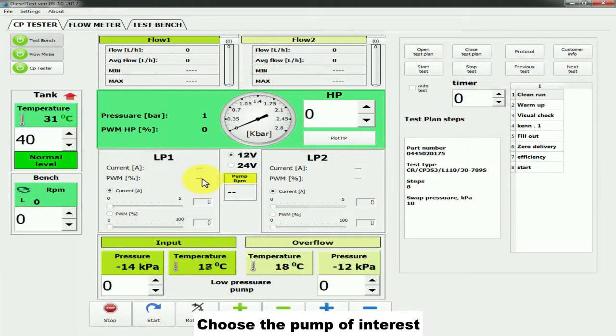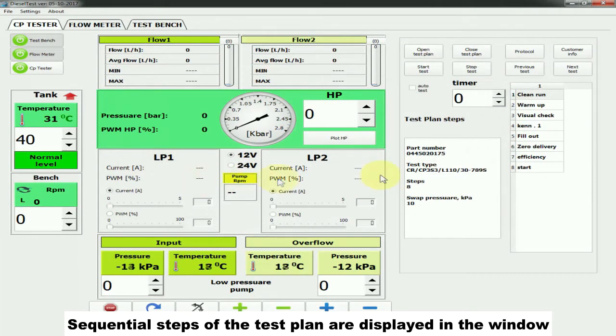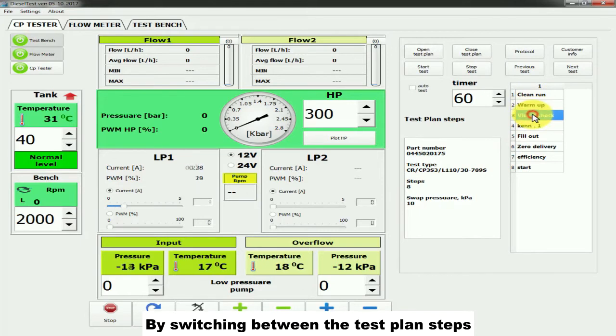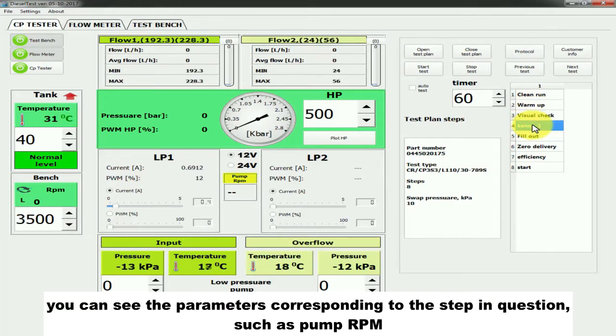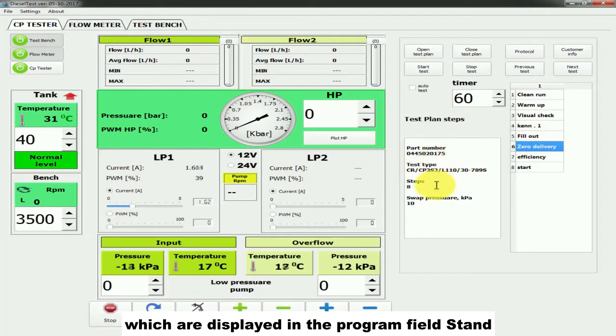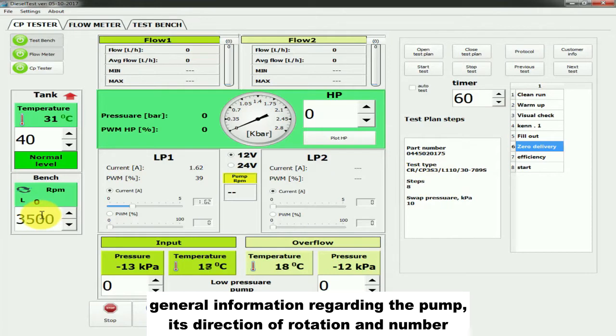Sequential steps of the test plan are displayed in the window. By switching between the test plan steps, you can see the parameters corresponding to the step in question, such as pump RPM, which are displayed in the program field stand, general information regarding the pump, its direction of rotation and number.